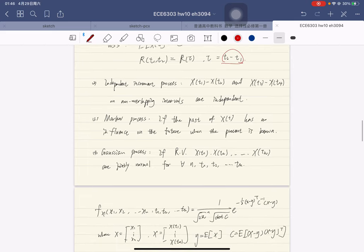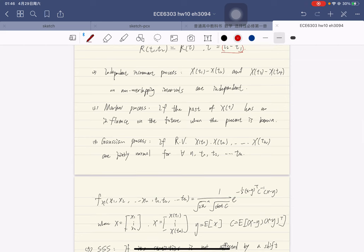And the third is Markov process, which is defined by: if the past has no influence on the future when the present is known, then a process X(t) is a Markov process.